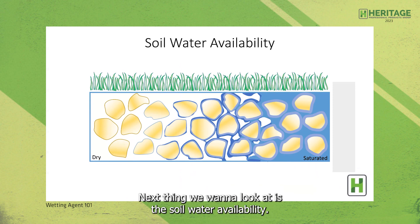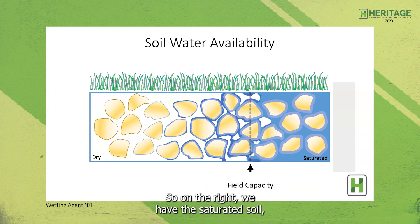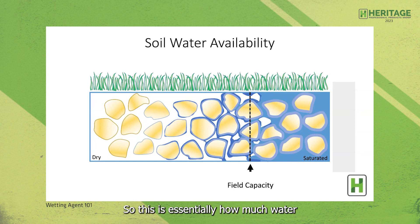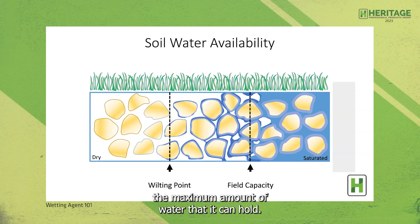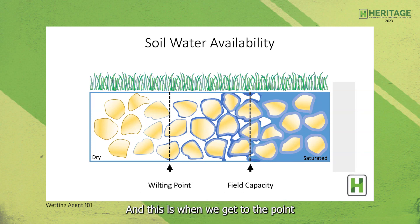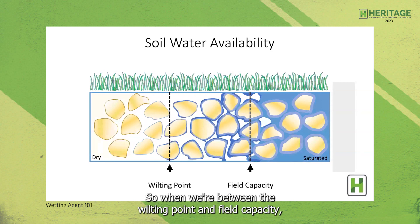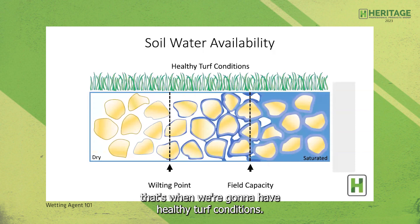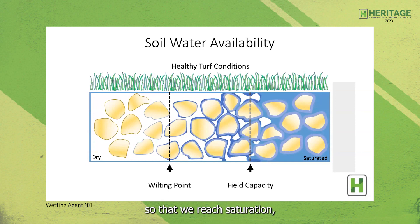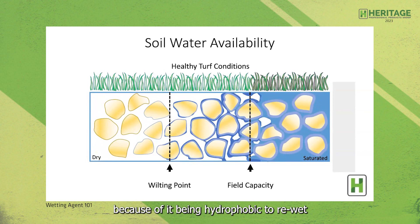Looking at soil water availability: we have saturated soil, and we reach field capacity — essentially the maximum amount of water the soil can hold at any given time. Then we have the wilting point, when all the additional water held in the soil is in a form that cannot be taken in by the root system, and we start to see the decline of plant material. When we're between the wilting point and field capacity, we have healthy turf conditions. We don't want too much water causing saturation, but we also don't want the soil to completely dry out, because hydrophobic soil is very hard to re-wet after it dries out completely.